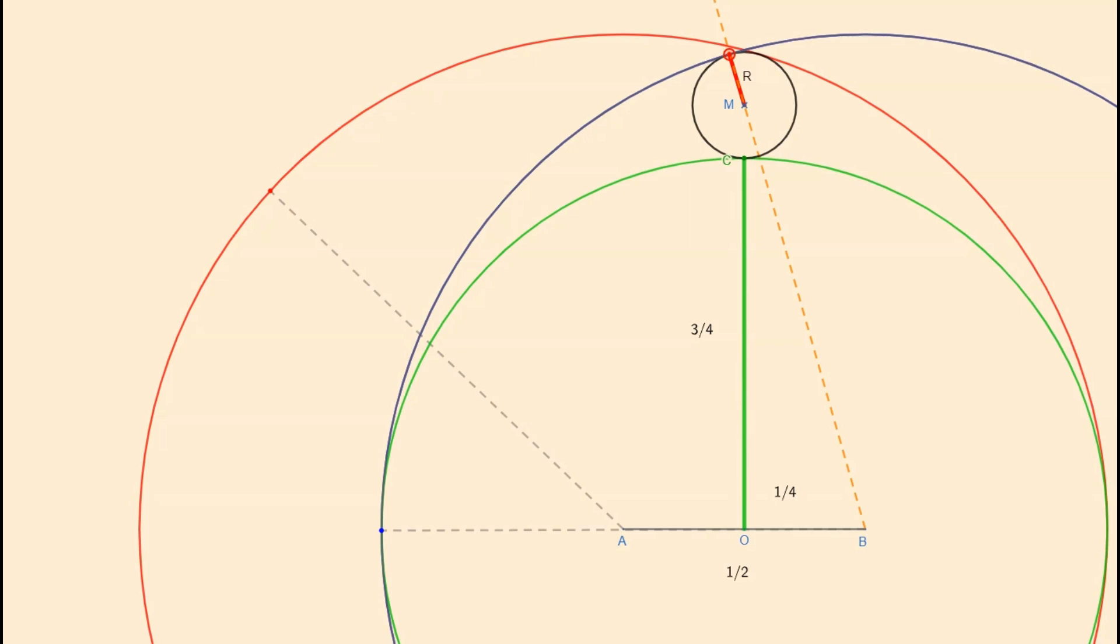This implies that the segment BM has length 1 minus R. Furthermore, we can deduce that the segment OM is 3/4 plus R. We have found our appropriate triangle BMO.